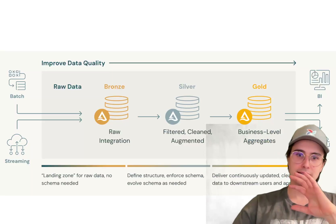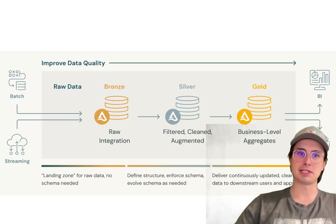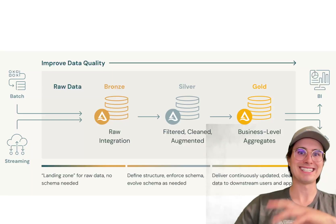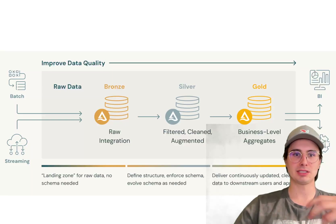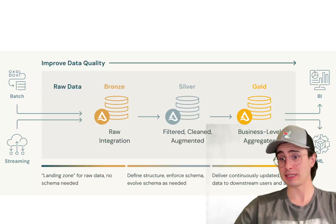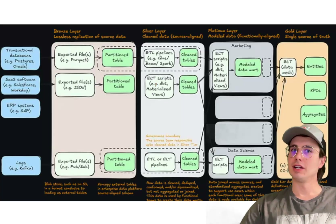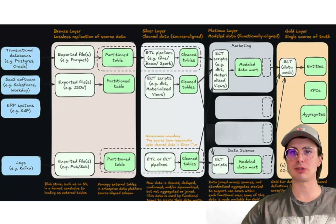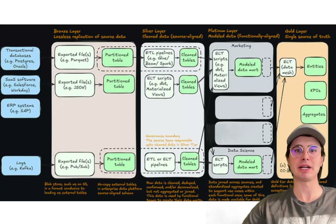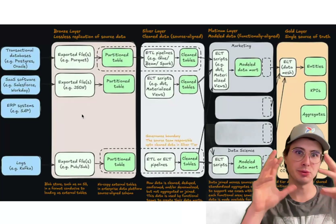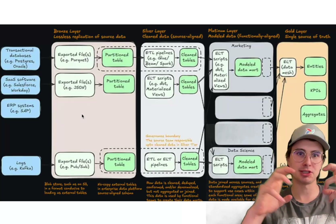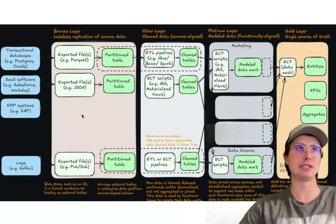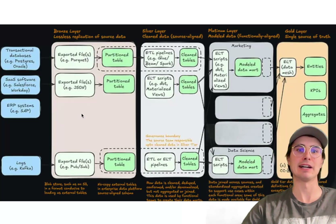Now I want to go into each of the individual layers and talk about how you might want to implement them. Here we have a much more granular graph of what's happening within the Medallion architecture, so we can start talking about the specifics of each layer.